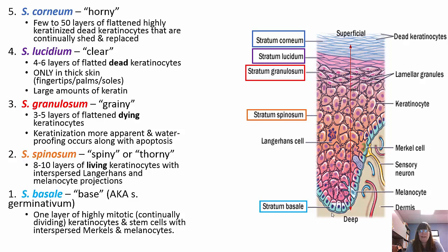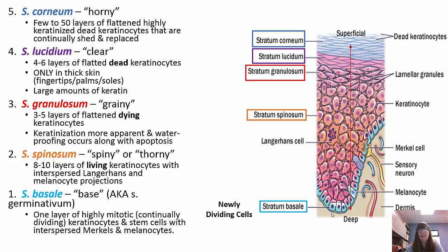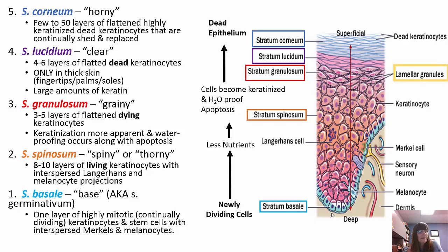The stratum basale is also called the stratum germinativum. It's one layer that is continuously dividing — highly mitotic — with keratinocytes and stem cells interspersed with some melanocytes and Merkel cells. This is the layer whose continuous division is why our skin is continuously shedding. We lose skin on a daily basis. As you go up through the layers, cells start to die and flatten out, going from highly mitotic cells to dead keratinocytes that slough off.